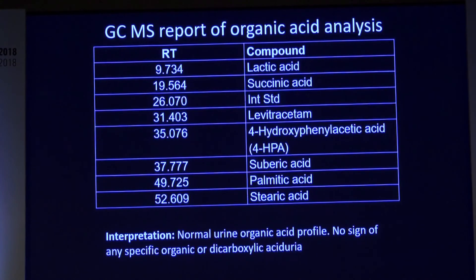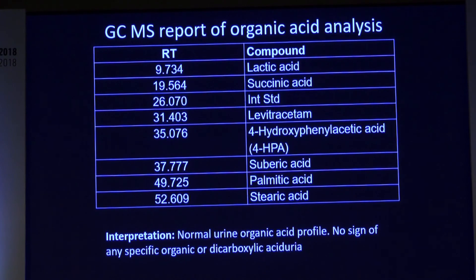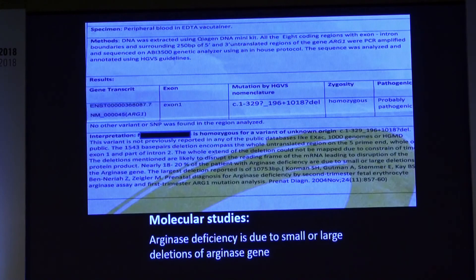Organic acid analysis by GC-MS was normal, ruling out organic acidemia. This was therefore a case of urea cycle defect, probably due to arginase deficiency. Molecular studies were carried out which confirmed arginase deficiency due to small or large deletions.